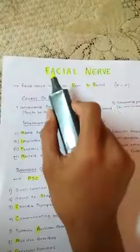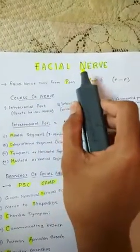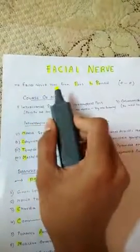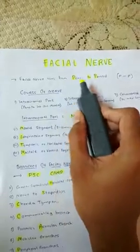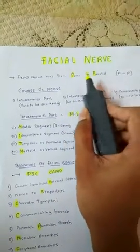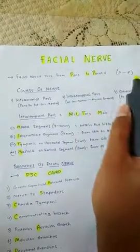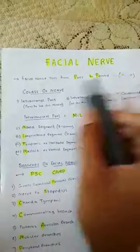Good morning. Today we will learn about facial nerve in a much simpler way. Facial nerve runs from pons to parotid. You can remember it by P2P, that is pons to parotid.